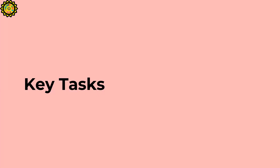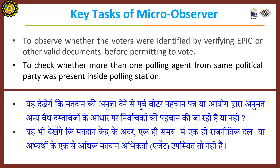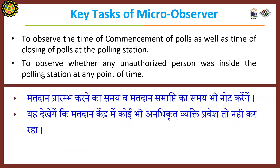The key tasks of the Micro-Observers are to understand the instructions given by the General Observer, observe whether the entry pass system for agents is being followed, observe whether voters were identified by verifying EPIC or other valid documents before being permitted to vote, and check whether more than one polling agent from the same political party was present inside the polling station.